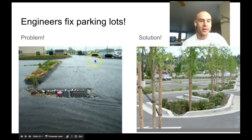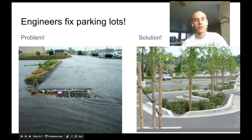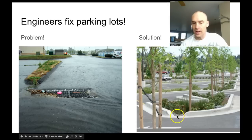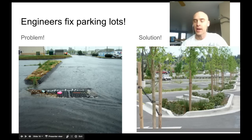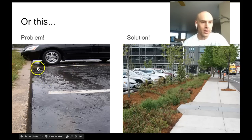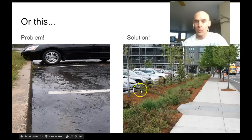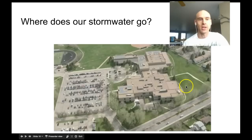Engineers fixed parking lots too. Look at this parking lot - all the water takes every pollutant down into the storm drain and directly into rivers and streams. Here's a possible solution: these parking islands are actually recessed - lower than the parking lot - with entrances cut into the curb. Water filters through, runs along the edge, and finds its way into these notches, feeding the plants and filtering the water. You can also have a recessed area without a curb where all water drains into the bioswale and feeds vegetation.